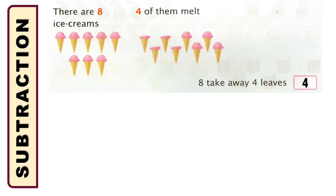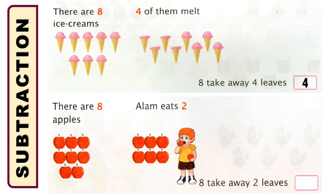Another example: suppose I am taking eight apples and among them, the alum is going to eat two apples. So how many remain? Let's count. We can see that there are one, two, three, four, five, six apples remaining. It means that eight take away two leaves six.